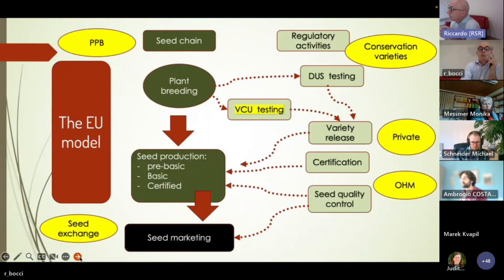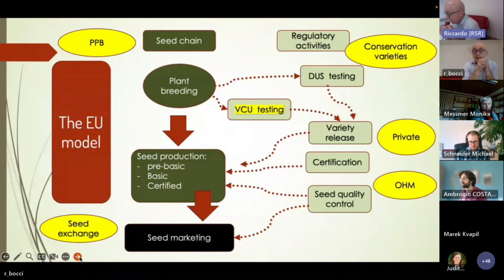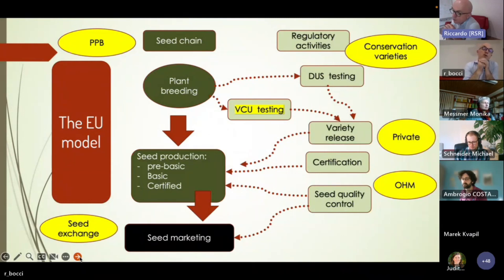What is currently under discussion — highlighted in yellow — is a new definition of conservation varieties. The Commission's idea, from meetings held in February, is to possibly include new varieties developed through participatory plant breeding within the concept of conservation varieties. They have already defined seed exchange among seed savers or for conservation purposes, though it is still not clear how to manage seed exchange among farmers. Organic heterogeneous material will be included in some way in the new seed marketing laws.